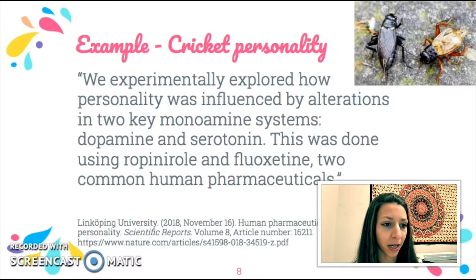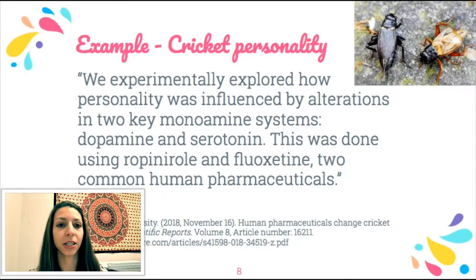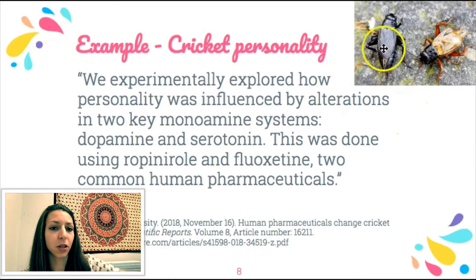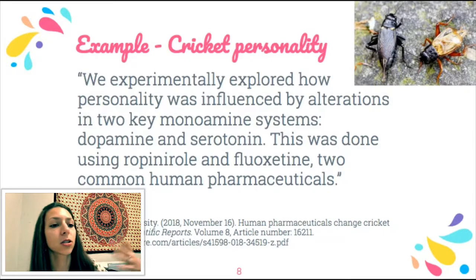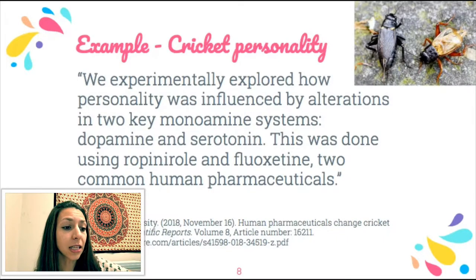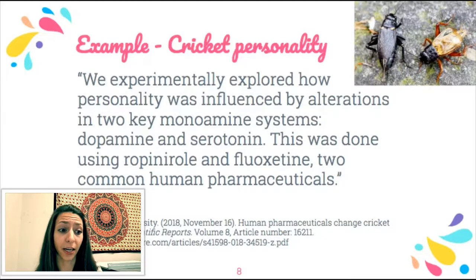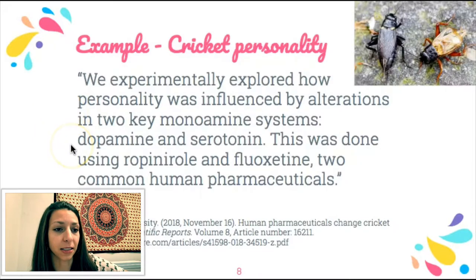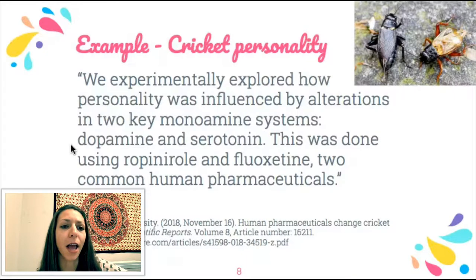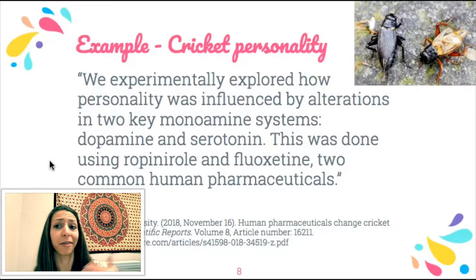Here's a specific experiment example. A paper was published this past year on the Mediterranean field cricket. The researchers wanted to test how certain neurotransmitters — like dopamine and serotonin — affected behavioral outputs of the crickets, addressing a gap in knowledge about how these brain chemicals actually affect personalities and whether they produce behavioral change.